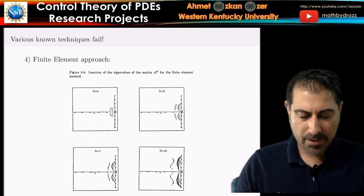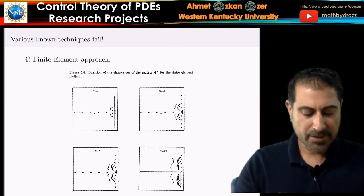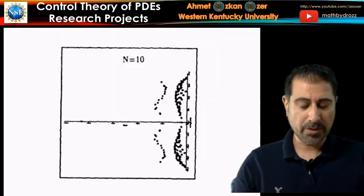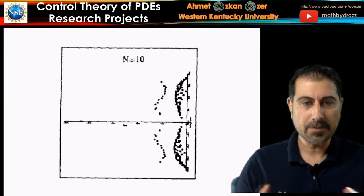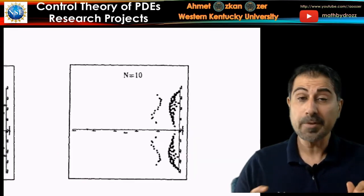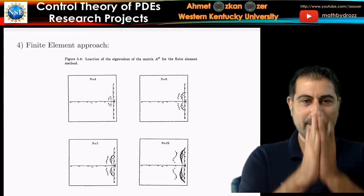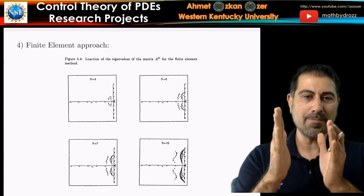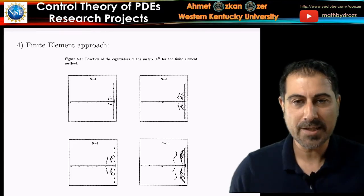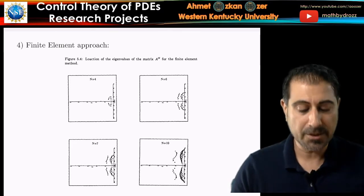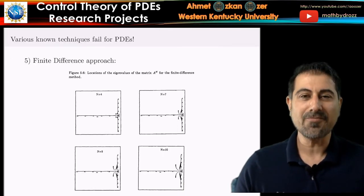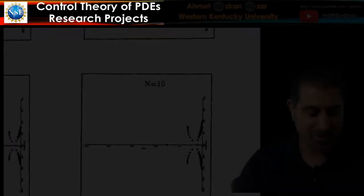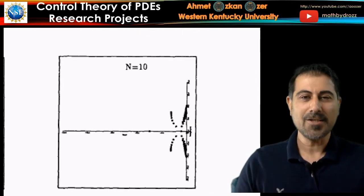They also tried the finite element approach — the situation is even worse. In the PDE setting, there is a uniform gap between the real parts of the eigenvalues and the imaginary axis, giving exponential stability with a fixed decay rate. The finite difference approach is another easy technique to apply, but eigenvalues get extremely close to the imaginary axis — the situation is even worse.